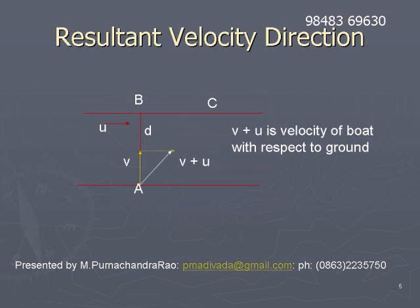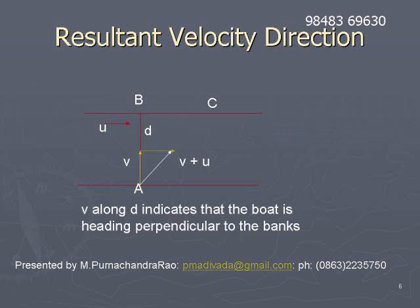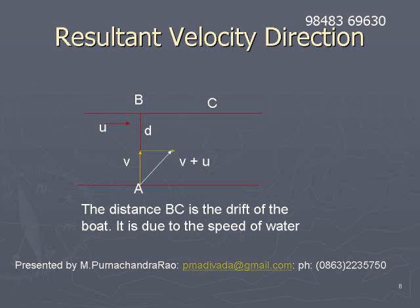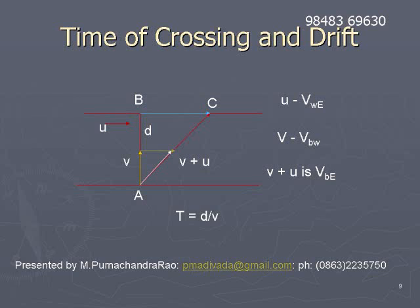Then v plus u represents the velocity of boat with respect to earth. When a boat heads perpendicular to the banks, the vector v is directed towards B, which is perpendicular to the banks. But actually it travels along AC with a velocity v plus u, because of the flow of water. The water drifts the boat towards C. By the time the boat reaches the other bank, it reaches the point C. So the distance BC is moved by the speed of water — this is known as the drift of the boat.